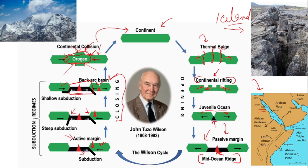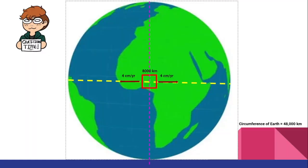After erosion brings the land back to sea level, you can have another continent or supercontinent ready to rift again, completing the Wilson Cycle. This is the complete idea of how these features shape the surface of the Earth — a brief overview of the Wilson Cycle and its importance.